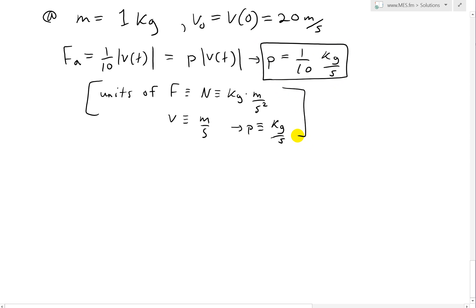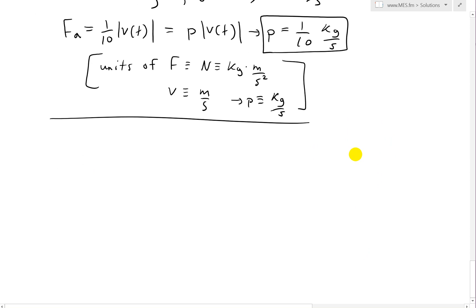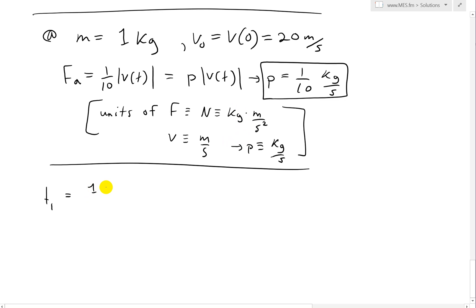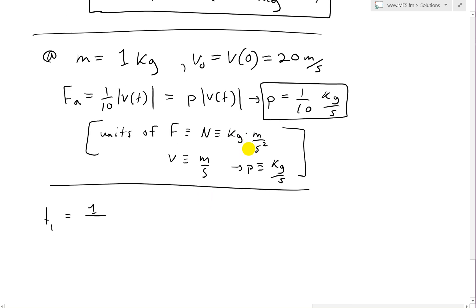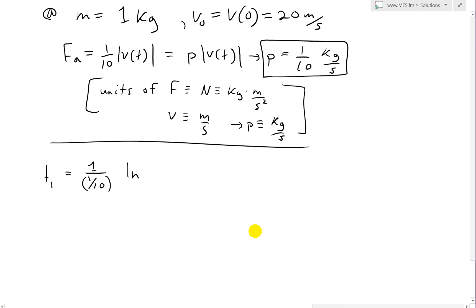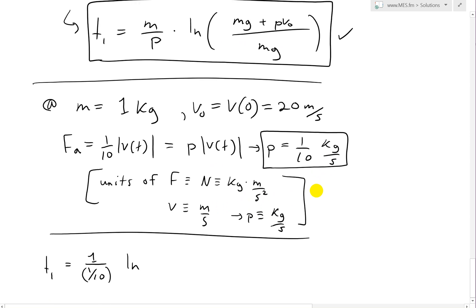Now plugging into the formula: T1 = M/P * ln((Mg + PV0)/Mg). M = 1 kg, P = 1/10, so M/P = 1/(1/10) = 10 seconds. The ln has no units since all terms inside are in Newtons and cancel. Assuming g = 9.8 m/s², we get T1 = 10 * ln((1×9.8 + (1/10)×20) / (1×9.8)).